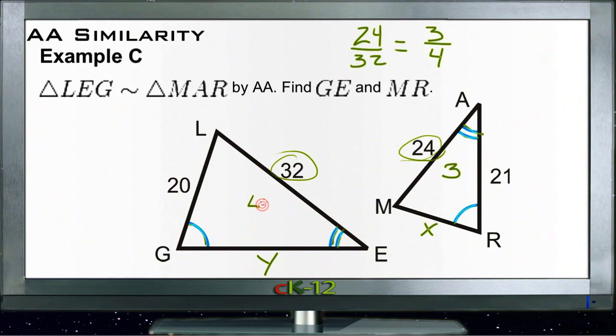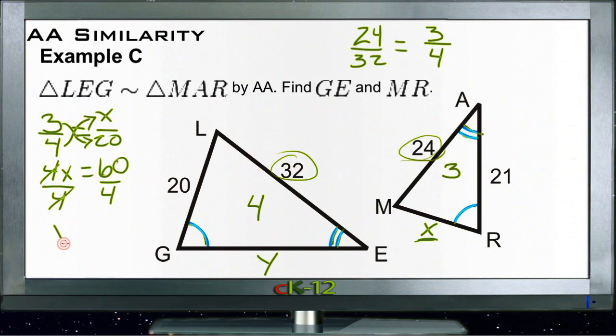Now if we need to find MR, which is our variable X right here, it's going to compare to LG which is 20 units. So we can say that 3 compares to 4 in the same way that X compares to 20. Now we can cross multiply: 4 times X is 4X and 3 times 20 is 60. Divide both sides by 4 and we get X equals 15. So that tells us that MR must be 15 units.